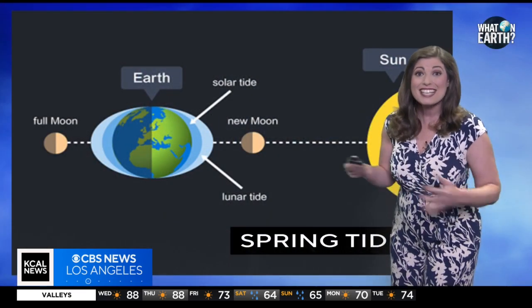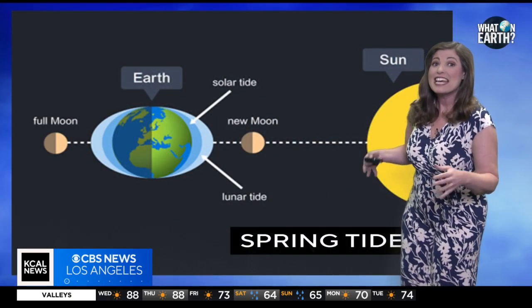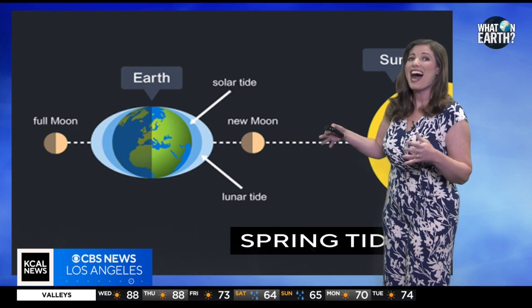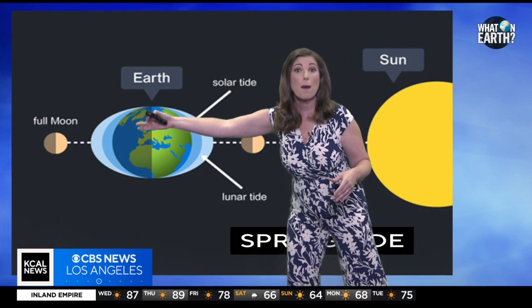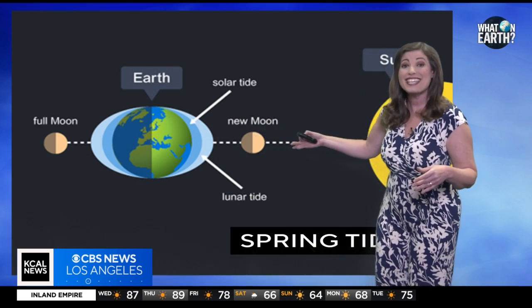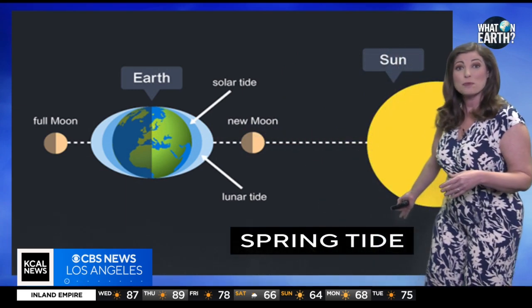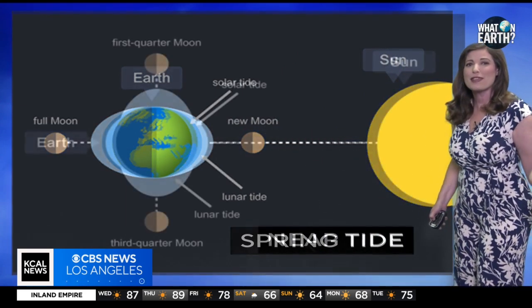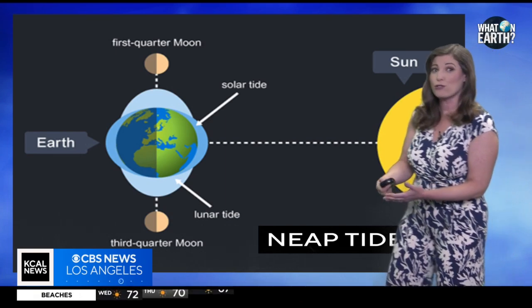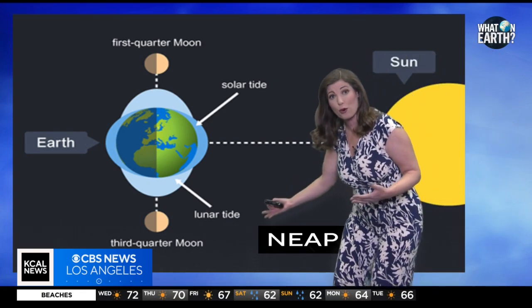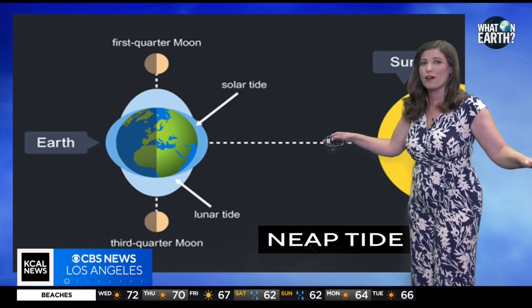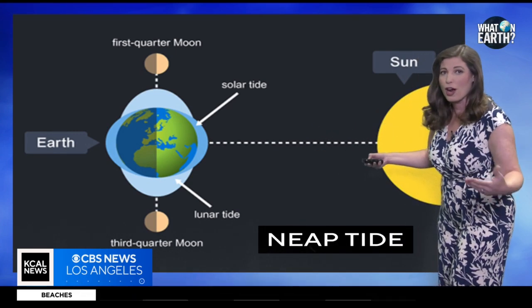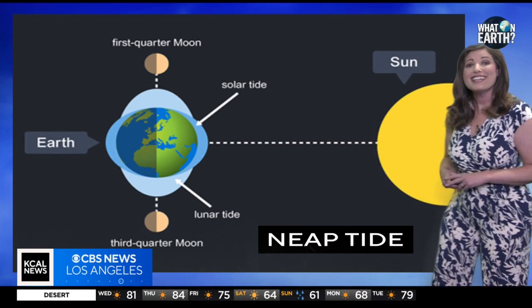But here's where it gets even more fascinating. As the Earth rotates on its axis, different parts of the planet experience high tides when the moon is directly overhead or on the opposite side of the Earth, and we get these tides known as spring tides. Conversely, when the sun and the moon are at right angles to each other during the first and third quarter moon phases, their gravitational forces partially cancel out, resulting in lower high tides known as neap tides.